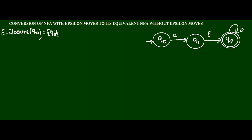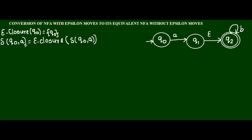The next step is to find the transition for state Q0. In this example, two inputs are there: A as well as B. So I am going to find the transition for these two input symbols. While finding the transition of Q0, if the input is A, I first find the transition and then find the null-closure for the resultant state. Q0, if input is A, the next state is Q1, so it is null-closure of Q1.